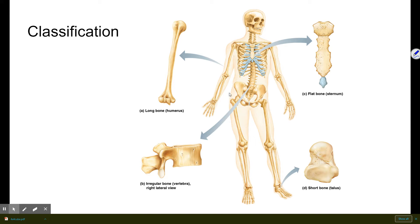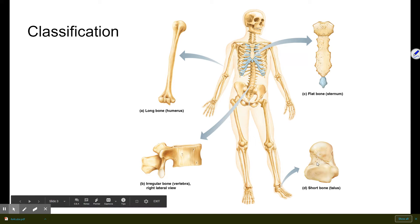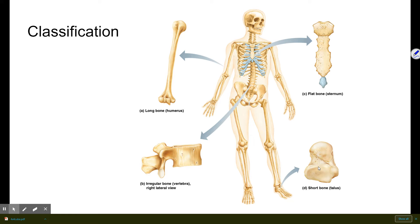Then there are short bones. Short bones are cube-shaped is the best way to think about them — not obviously a cube, but kind of a little ball shape. Wrist bones and ankle bones are great examples of this, as are some of the digits in your fingers and toes.